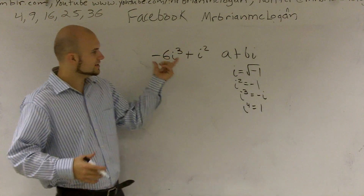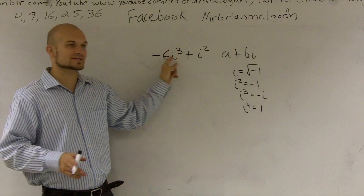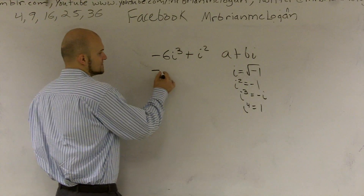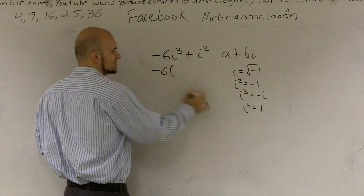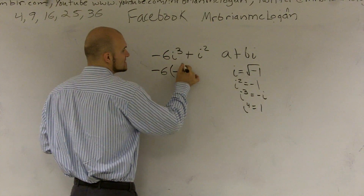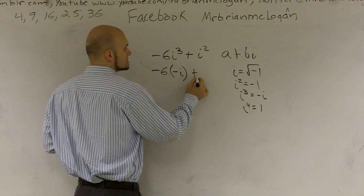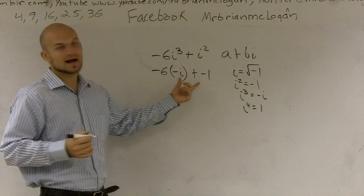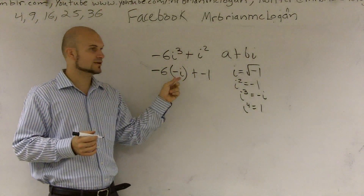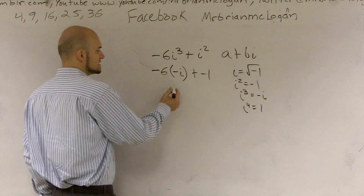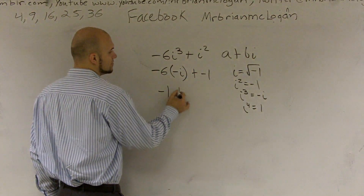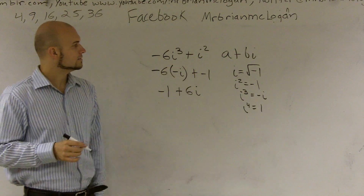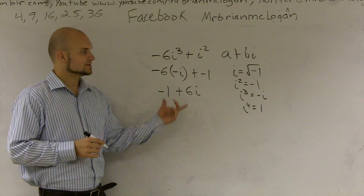So what I do here is just rewrite these. Instead of using i cubed and i squared, I need to get it in standard form. So I'm going to write negative 6 — and instead of writing i cubed, we know i cubed is the same thing as negative i — plus i squared, which is the same thing as negative 1. Now I only have one i, and I can write this in standard form: negative 1 plus 6i, and the two negatives cancel out.